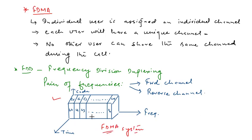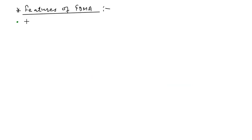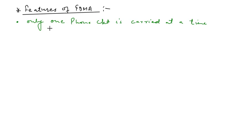In an FDMA system, the total bandwidth is divided into a number of channels and each channel is assigned to an individual user who is bound to communicate in that channel only. FDMA systems carry only one phone circuit at a time — meaning in a single channel, only one phone circuit or one mobile station is supported at a time.